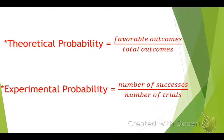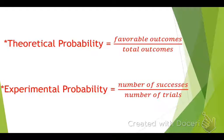Favorable outcomes — that's like if you're looking for something. So the favorable outcomes is the thing you're looking for, and the total outcomes is the total number of times it could possibly happen. Next up, experimental probability — it's when you're actually trying something out. The number of successes is the number of times it actually happened, and the number of trials is the total number of times you tried.